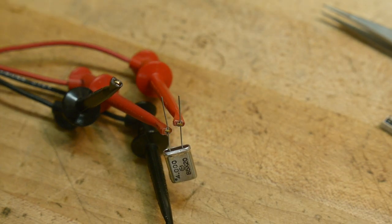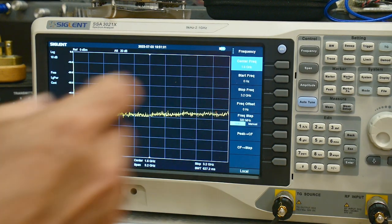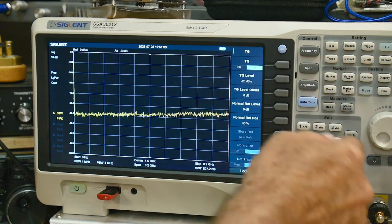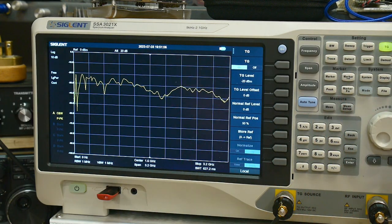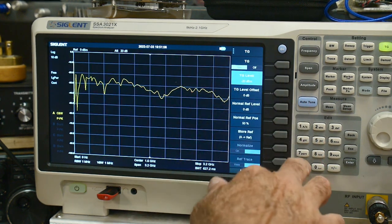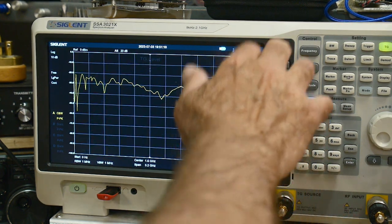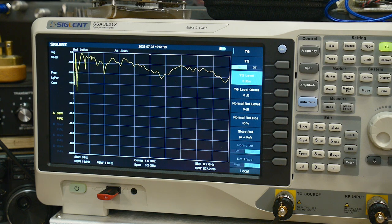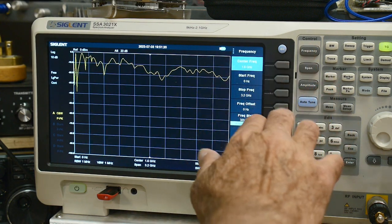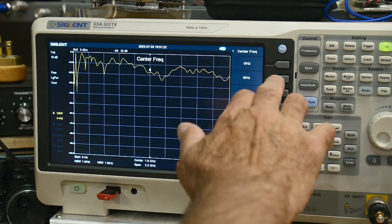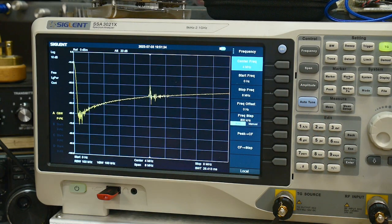If we have a spectrum analyzer with a tracking generator, then we can turn that on. We can then put in 0 dBm of power. That looks good. Then we want to look around 4 megahertz, which is this crystal. We'll do a frequency center of 4 megahertz.